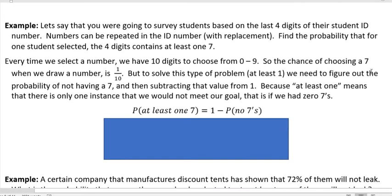A totally different example. Let's say that you were going to survey students based on the last four digits of their student ID numbers. Numbers can be repeated in the ID number, with replacement, so they could be 9999, it's okay. Find the probability that for one student selected, the four digits contain at least one seven. See how we get at least one in there. We want to make sure there's at least one seven. Every time we select a number, we have 10 digits to choose from, zero through nine. So that gives us 10 different possibilities for each one. So the chance of choosing a seven when we draw a number is one tenth.